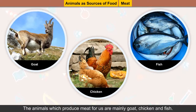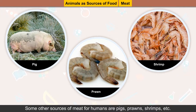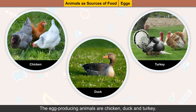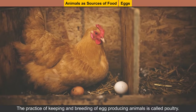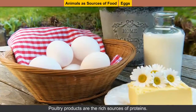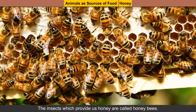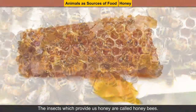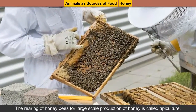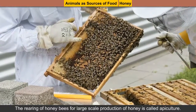Meat: The animals which produce meat for us are mainly goat, chicken and fish. Some other sources of meat for humans are pigs, prawns, shrimps, etc. Eggs: The egg-producing animals are chicken, duck and turkey. The practice of keeping and breeding of egg-producing animals is called poultry. Poultry products are rich sources of proteins. Honey: The insect which provides us honey is called the honeybee. The honeybees keep their honey in a beehive. The rearing of honeybees for large-scale production of honey is called apiculture.